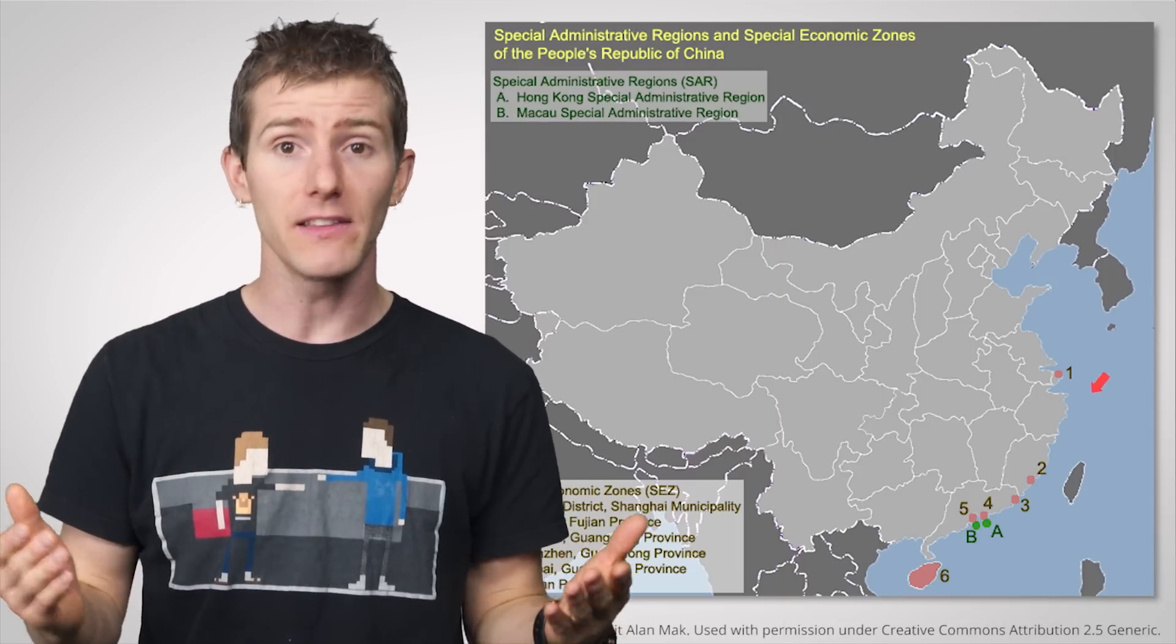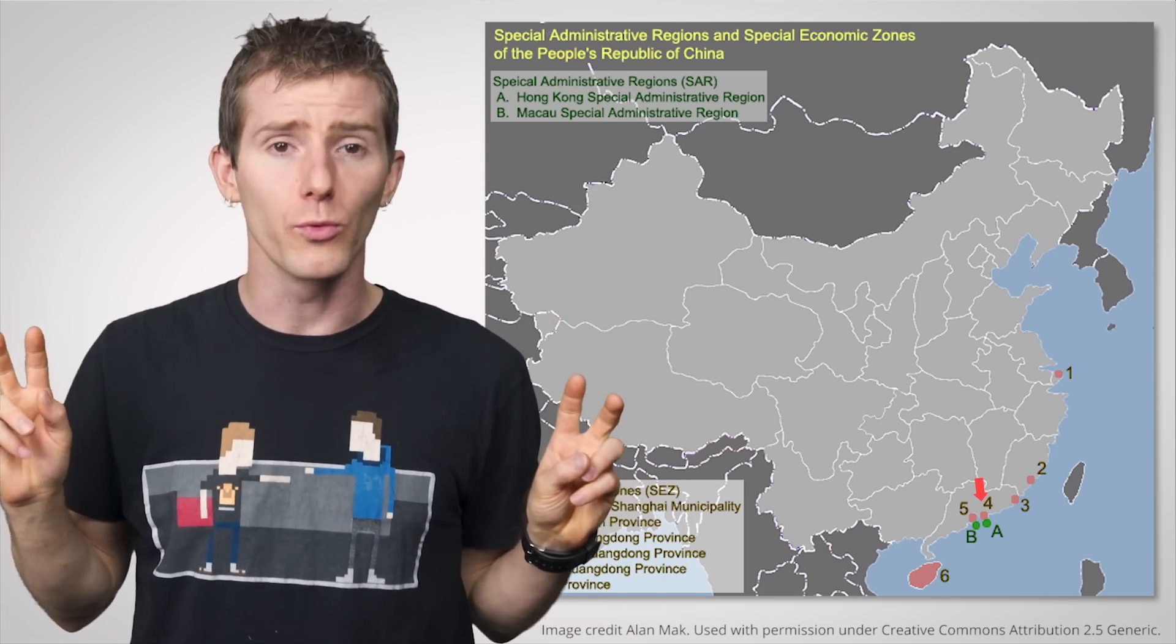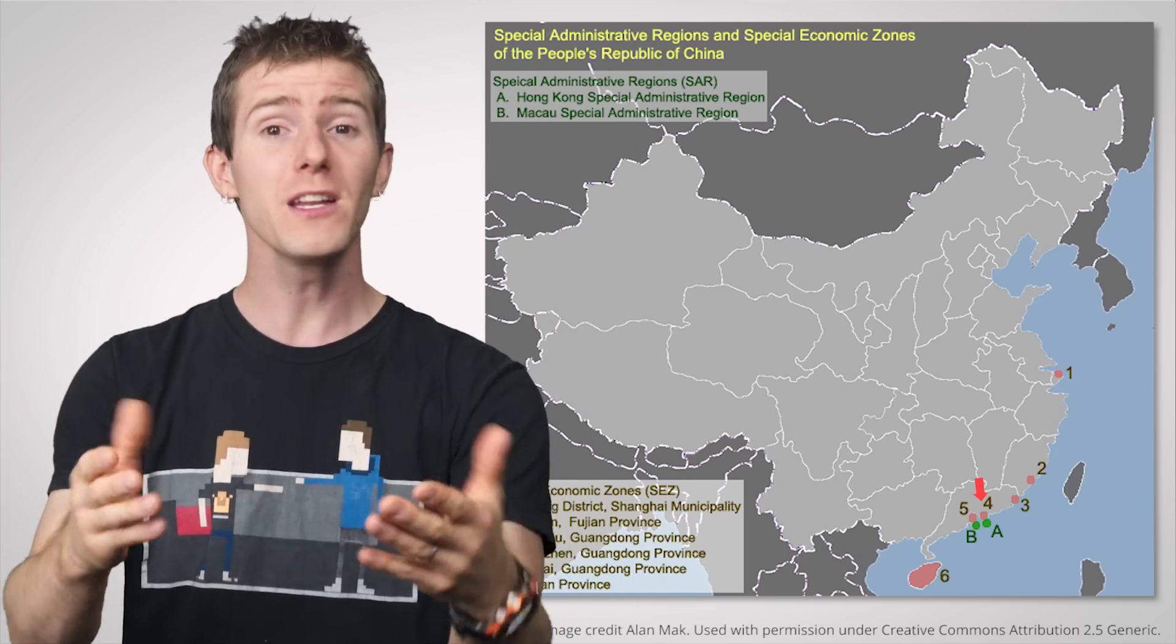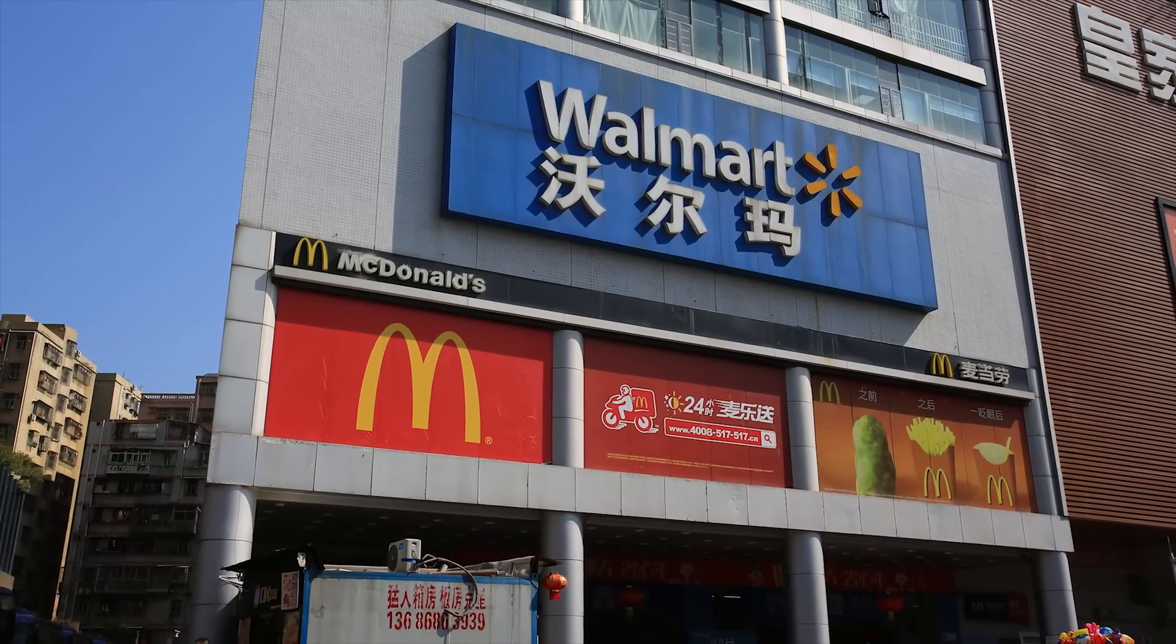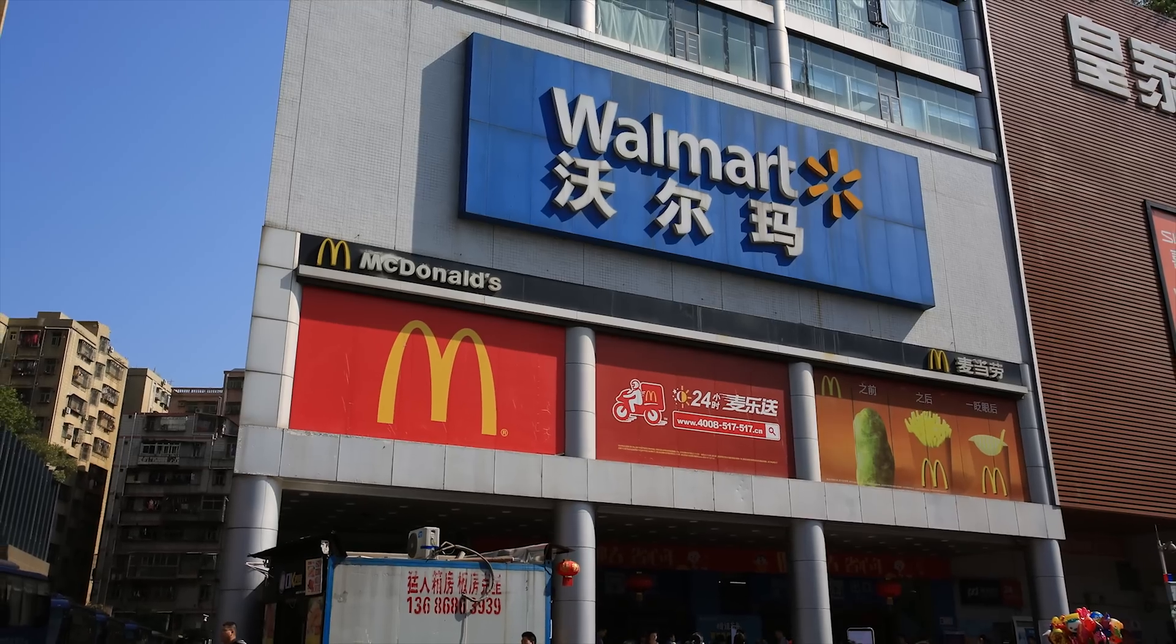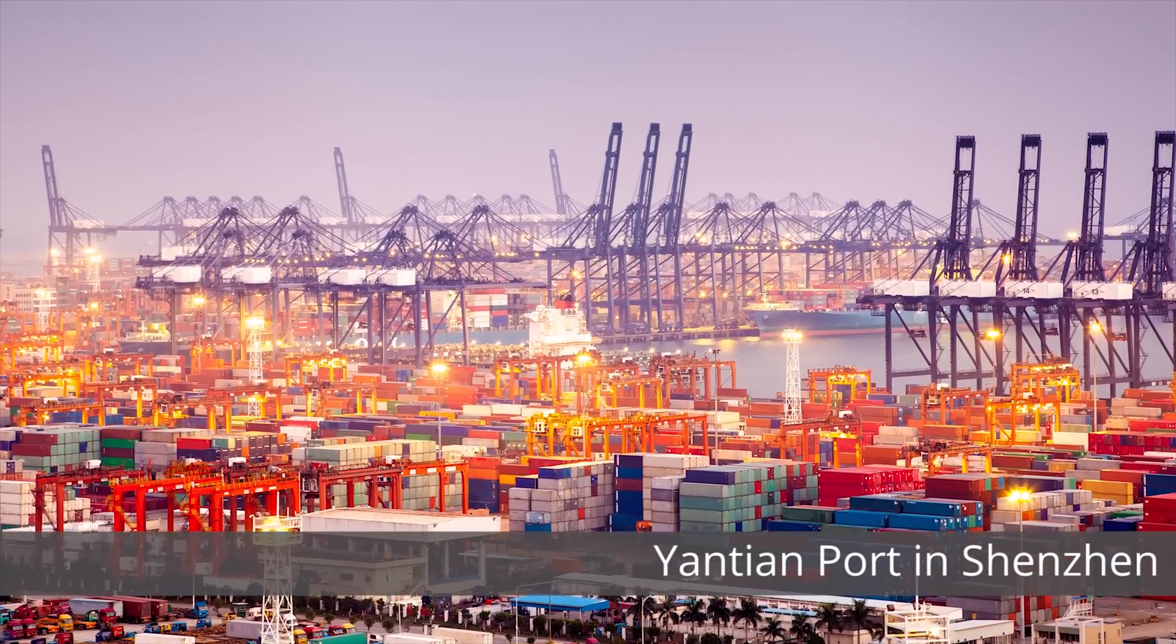One part of this was designating the aforementioned Shenzhen as a special economic zone which encouraged foreign private businesses to set up shop in the area through tax breaks and relative freedom from Beijing's regulations. China was especially interested in having these companies manufacture exports.